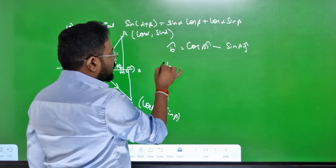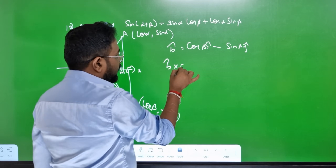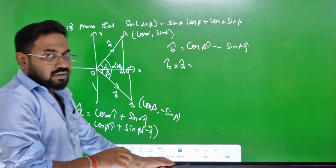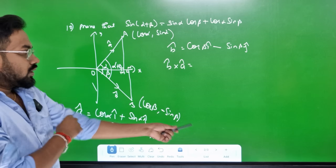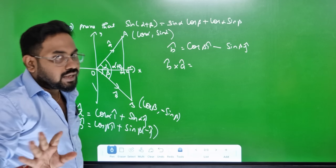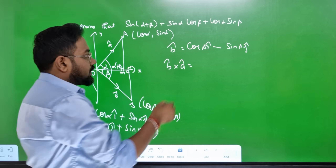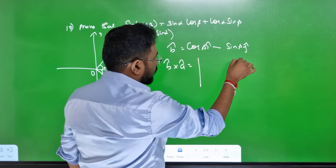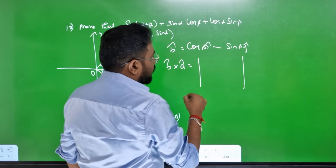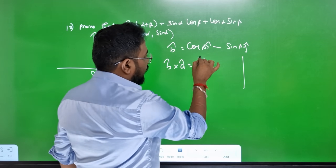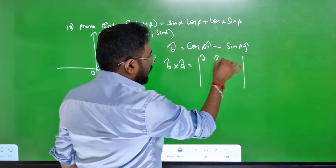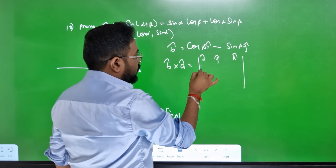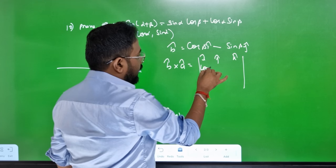Now we will cross the two. Sin cross — cross the dot. Then b cross a, a cross b — cross product.